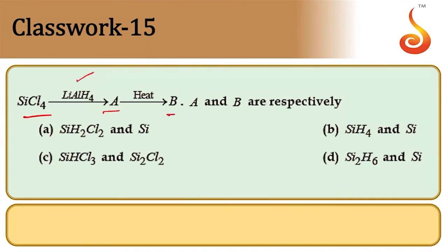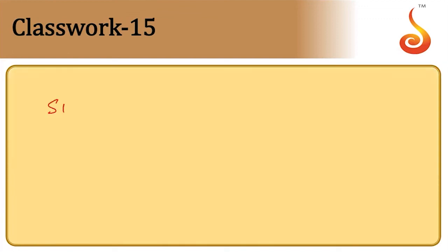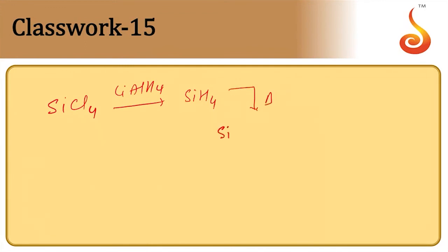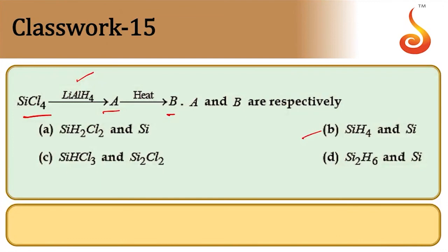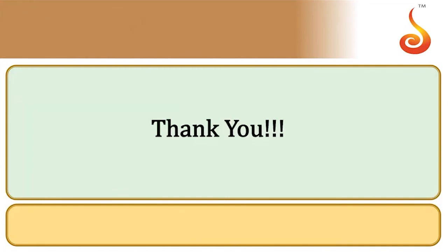Silicon tetrachloride (SiCl₄) on reduction with lithium aluminium hydride forms SiH₄ (compound A). On strong heating, SiH₄ dissociates to form silicon and hydrogen — so compound B is silicon. These two compounds are SiH₄ and Si. Answer is option B.